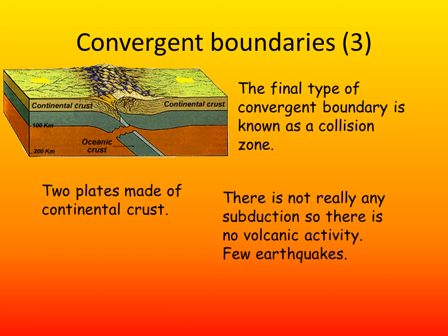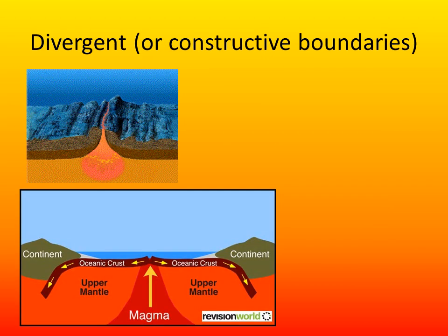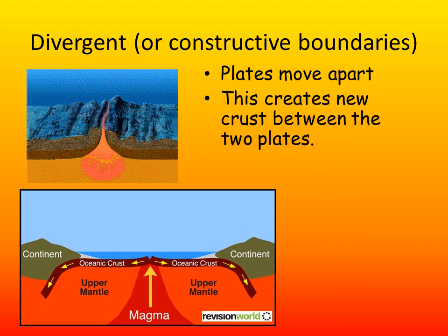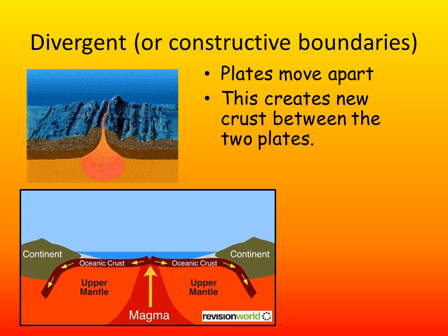So our final convergent boundary — the collision zone — produces very few earthquakes and little volcanic activity. Our next type is a divergent boundary, where two plates move apart. This creates new crust between the two plates. In fact, it was this type of boundary that eventually helped us put two and two together and come up with a decent theory of plate tectonics.